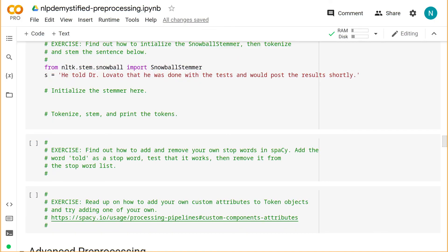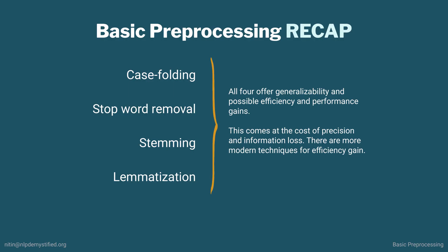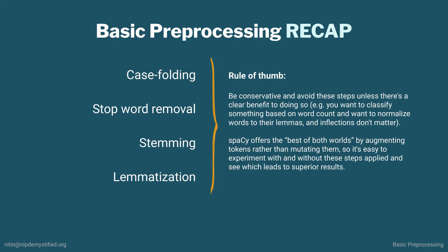So that's how spaCy takes care of basic preprocessing for us. In this video, we covered a few basic preprocessing techniques. In general, they offer potential efficiency gains and greater generalization, but at the cost of precision and information loss. Should you apply these steps? It depends on your goal. Be conservative and avoid them unless there's a clear benefit. A lot of NLP development is knowing your data and your goal well, and making the most informed trade-offs you can, being creative in the process — there is rarely a clear recipe. Fortunately, with spaCy and other modern libraries, we can get different views into our text and rapidly experiment with what yields the best results. Let's continue and cover more advanced preprocessing steps in the next video.